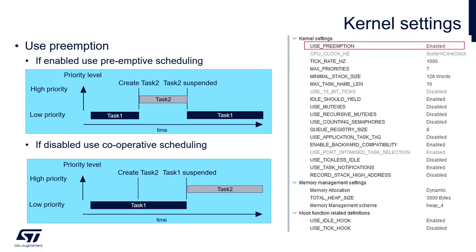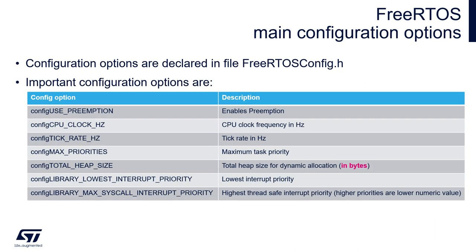Let's start with the UsePreemption setting, which specifies what kind of kernel algorithm we will use — with or without preemption. Some additional settings related to scheduler operations can be found within the FreeRTOS.h configuration file, which should be modified manually if needed. Here we can see some examples of the most important settings of FreeRTOS, available within the Config Parameters tab and stored within FreeRTOSConfig.h.